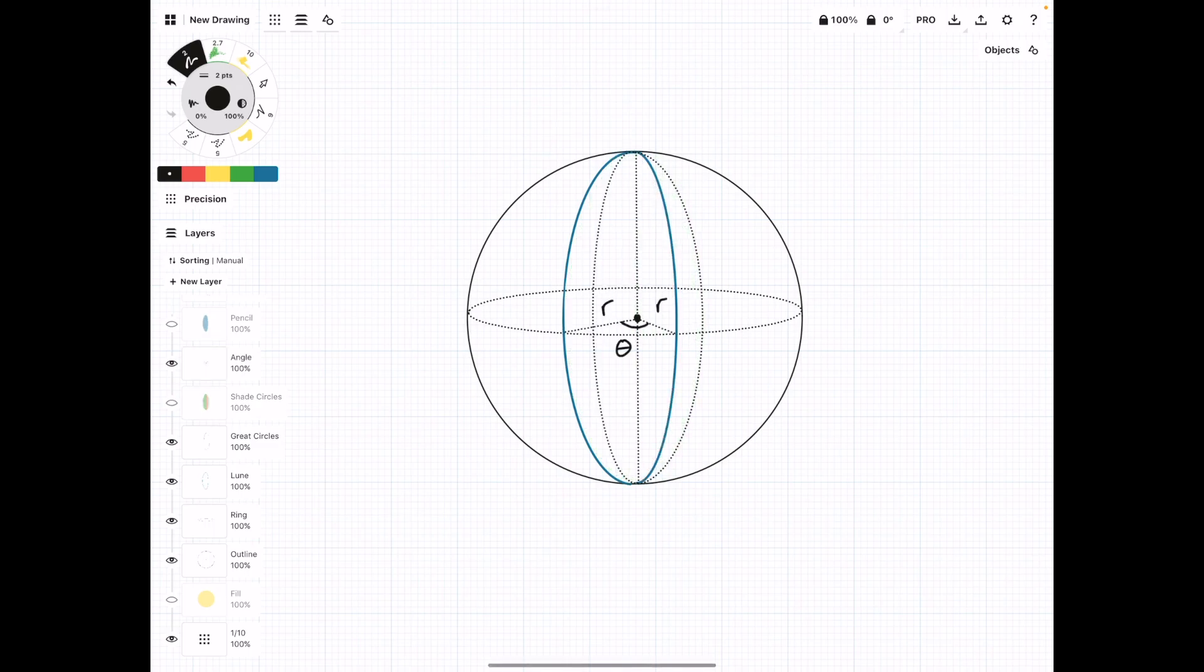So this angle theta is shown here, and then the distance from the center of the sphere to the outside is always r, so I've also added that.